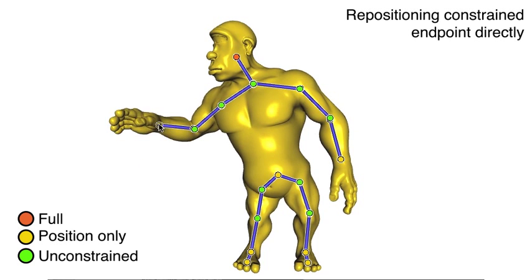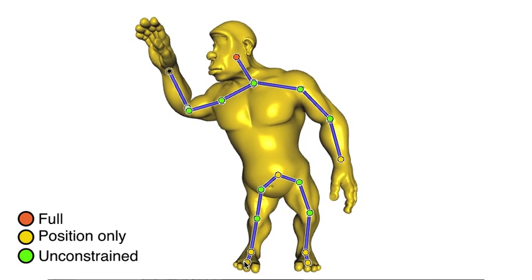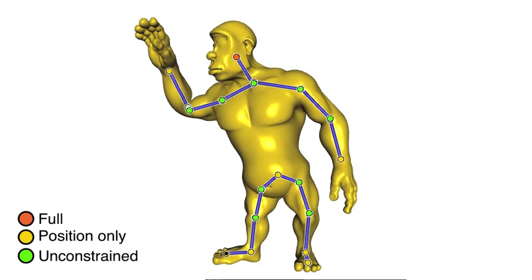Unlike inverse kinematics, which is oblivious to the shape, our method allows disconnected parts of a skeleton to interact through their overlapping influence on the shape.